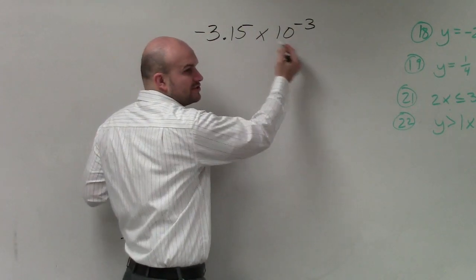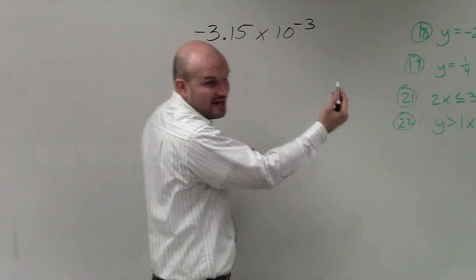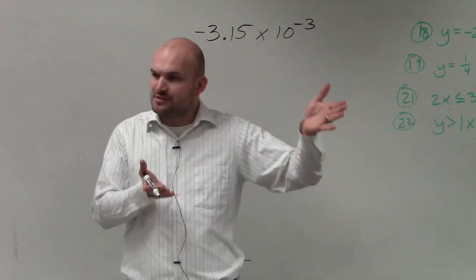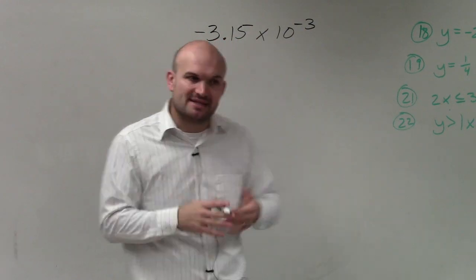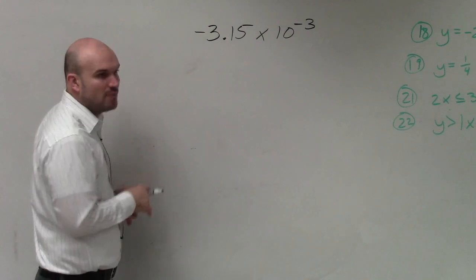So rather than moving our decimal point to the right like we're multiplying by 10, now we're going to be moving our decimal point to the left because we're dividing by 10. We're making that number actually even smaller.